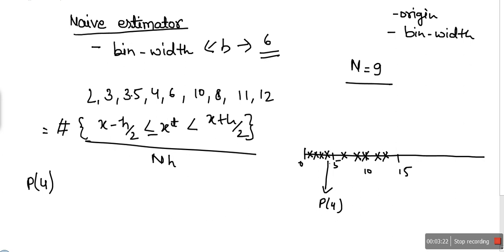The concept is that whatever x you are considering for probability computation, consider that x as the center of the bin. The bin width is 6, so from 4 to the left side there will be 3, and to the right side there will be 3.